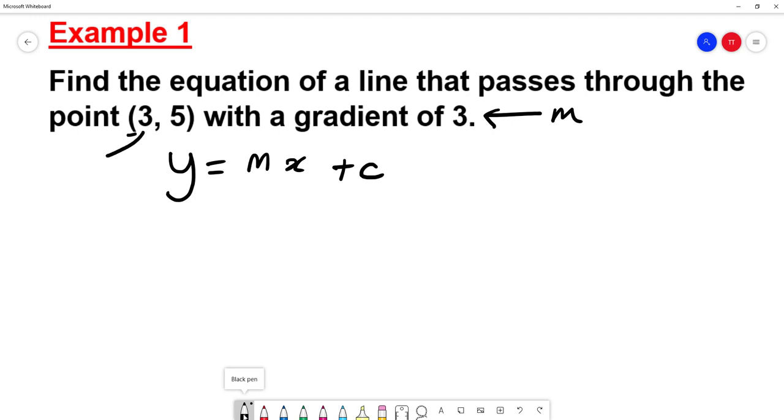The X coordinate is 3, so I'm going to call that X. And the Y coordinate is 5, so I'm just going to write that here. So X = 3, Y = 5, and we know that M = 3.